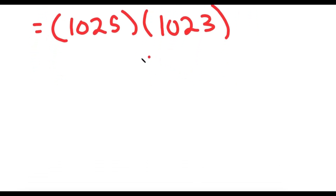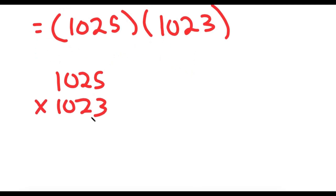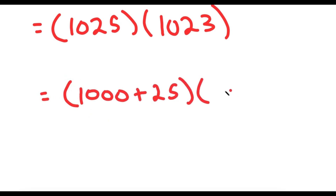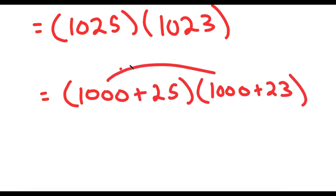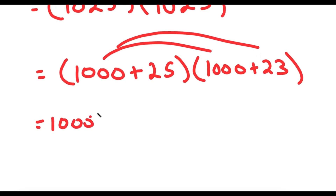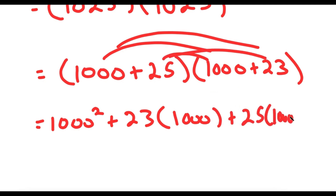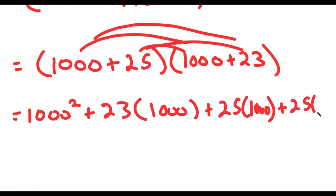To multiply these two, I'm not going to use the basic multiplication method because it takes too long. Instead, I'm going to rewrite this as 1,000 plus 25, times 1,000 plus 23. And now I can distribute my 1,000. So I get 1,000 squared plus 23 times 1,000. And now I can distribute 25, so I get 25 times 1,000, plus 25 times 23.